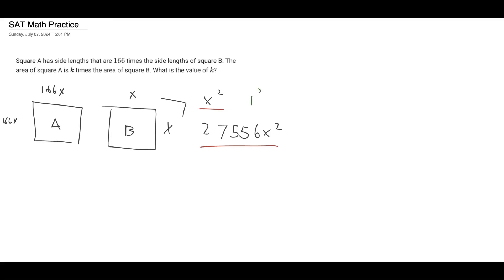So then we would get 1 squared. 1 squared is just 1. And then since 1 squared is 1, then we know for the bottom part, this is just equivalent to 27,556.